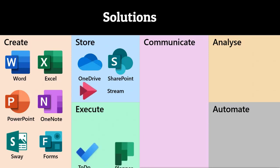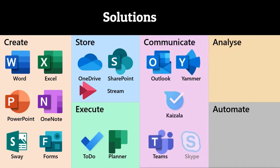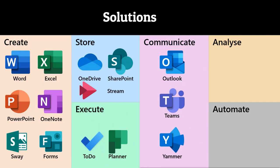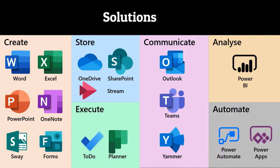For executing work, we have multiple tools: my work is Outlook Tasks and shared task list is Planner. For communication, we had multiple options which are now consolidated — Kaizala is getting merged into Teams and Skype is already being replaced by Teams. For analysis, I'm sure all of you are already using Power BI, so I don't need to explain it. For automation at end-user level, we have Power Automate — which was called Flow — and Power Apps, which is a low-code application generator.